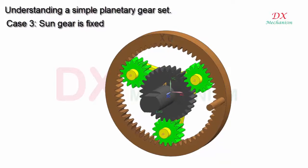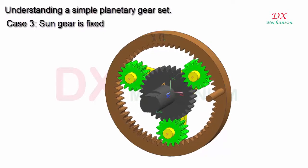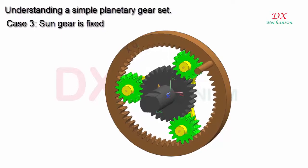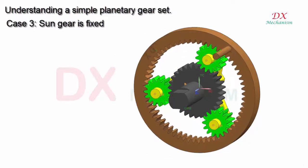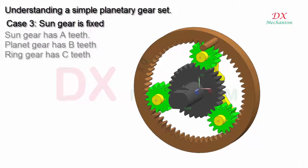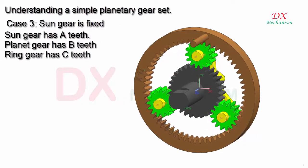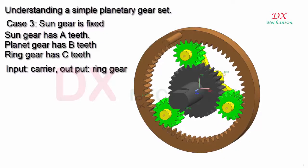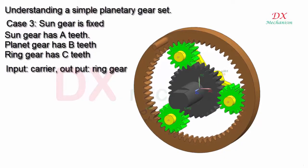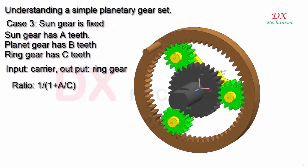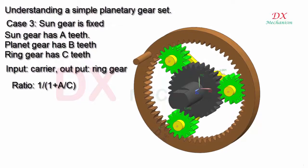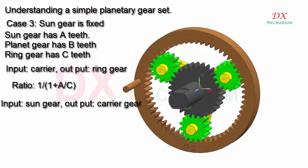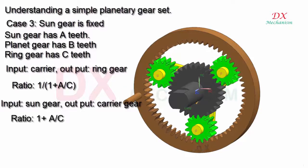The ring gear will rotate following the planet gear. How to calculate ratio transmission: Input carrier, output ring gear — formula of ratio. Input ring gear, output carrier — formula of ratio.